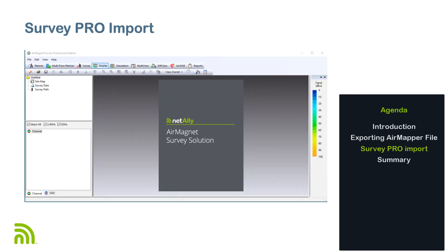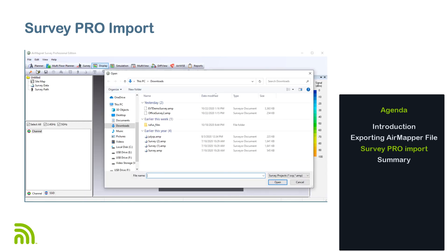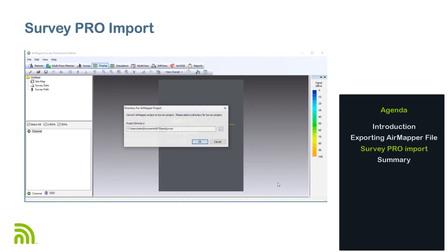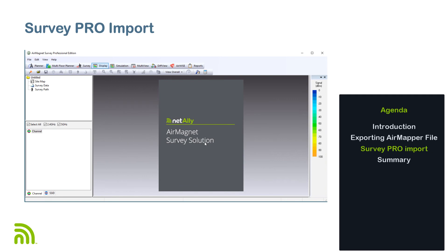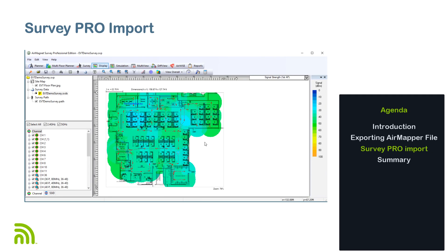After downloading the file, I will run Air Magnet Survey Pro on my computer. I will then click on File, Open Project, and select the .AMP file I downloaded from LinkLive. A window will appear allowing me to specify the project directory. In this case, I'll use the recommendation provided by Air Magnet Survey Pro. Clicking OK will convert the AirMapper project into an Air Magnet Survey Pro project.